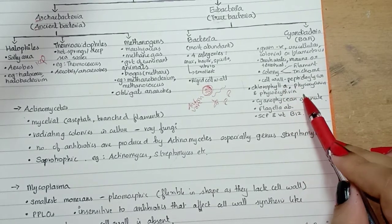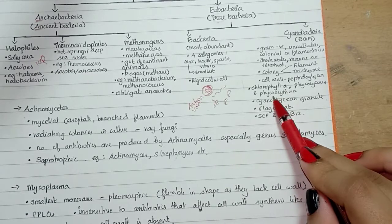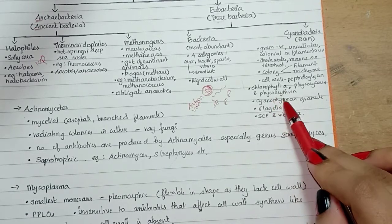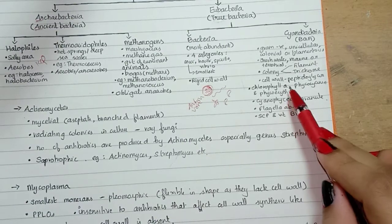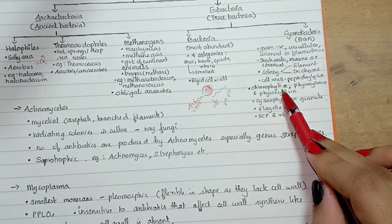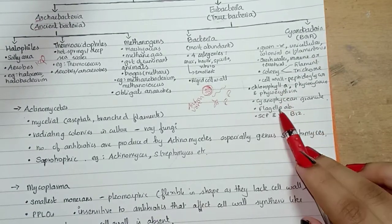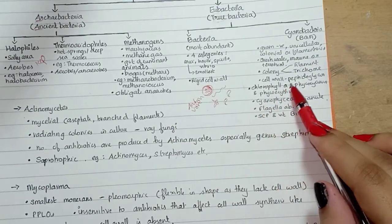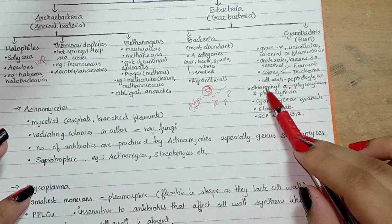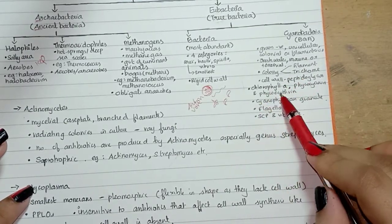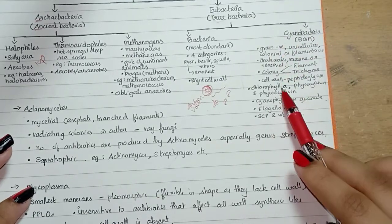They also have phycocyanin and phycoerythrin, which are present in cyanobacteria. Notably, phycocyanin and phycoerythrin are not present in most bacteria, but this blue-green algae, a type of eubacteria, does have them.